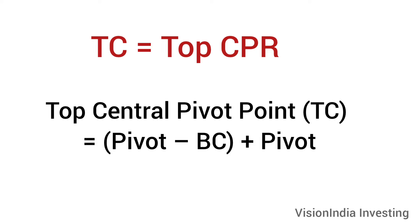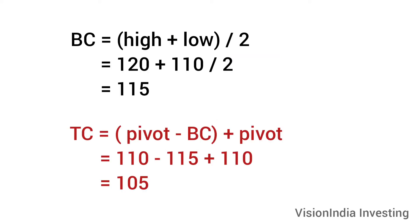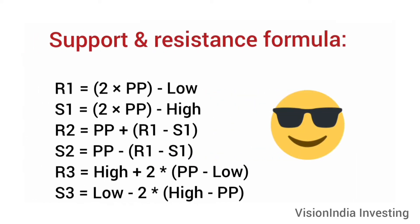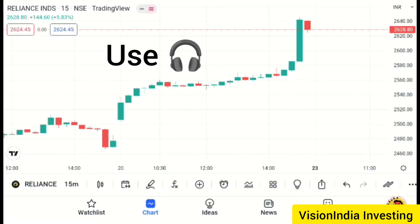This is TC — top CP. This is the example screen. You can see R1, R2, R3, R4, S1, S2, S3, S4 and S5 on the chart. You can see the link in the description below. If you want to select the trading platform, you can see the link in the description below.